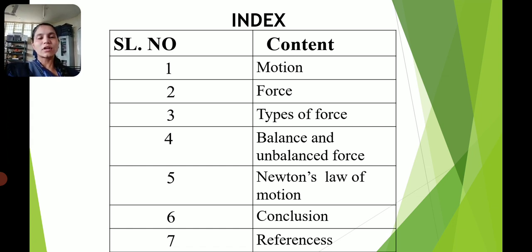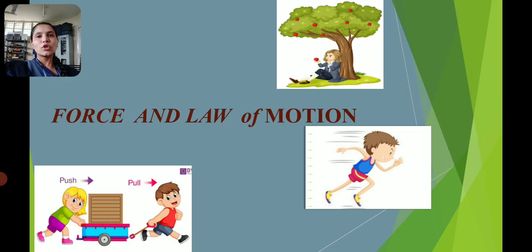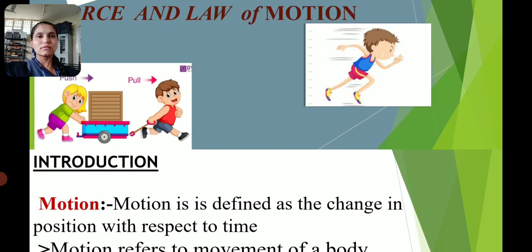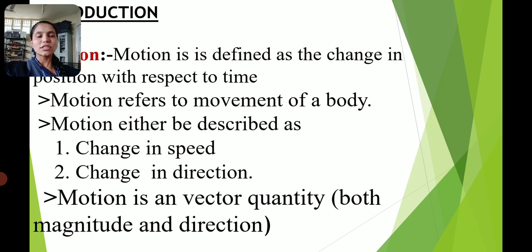First of all, I will discuss the concept of motion. You already heard about the term motion. Motion, simply defined: motion is moving objects or things. You can see in our environment, all things are in motion. What is motion? Motion defines the change in position with respect to time. Motion is a moving object — it involves both position and time.